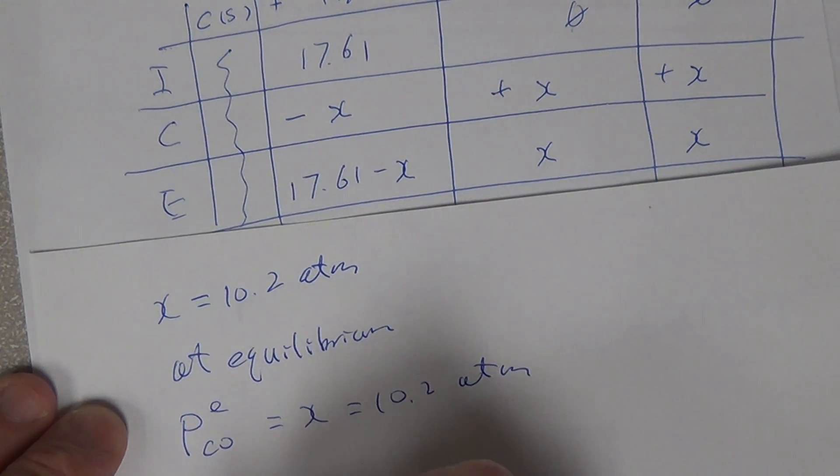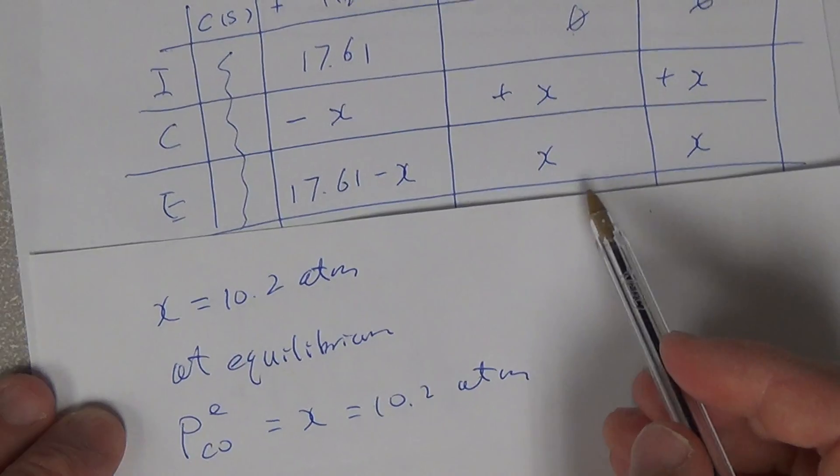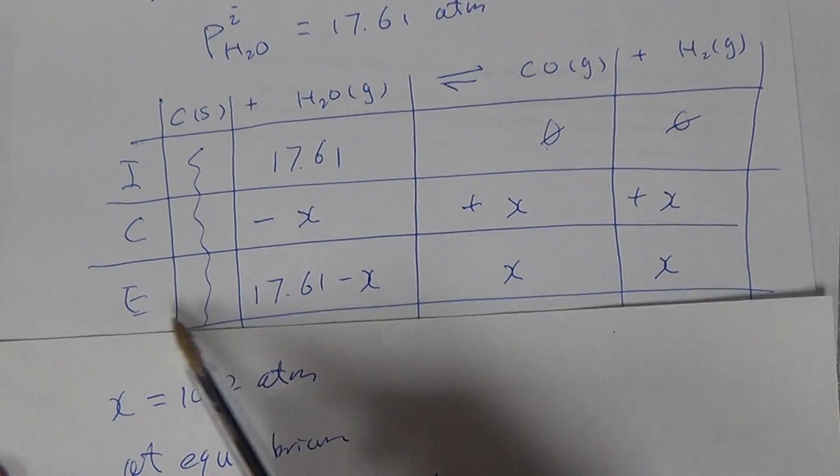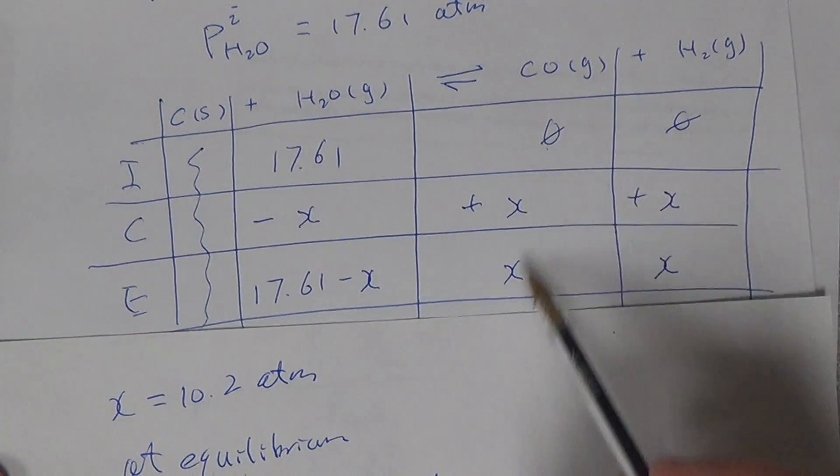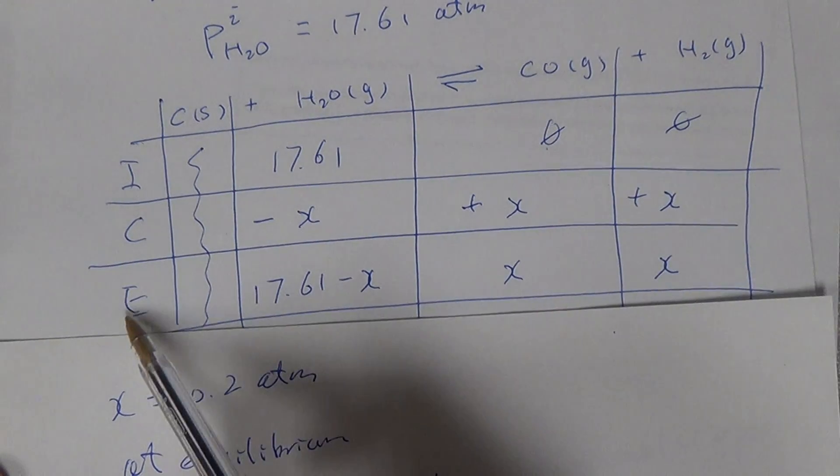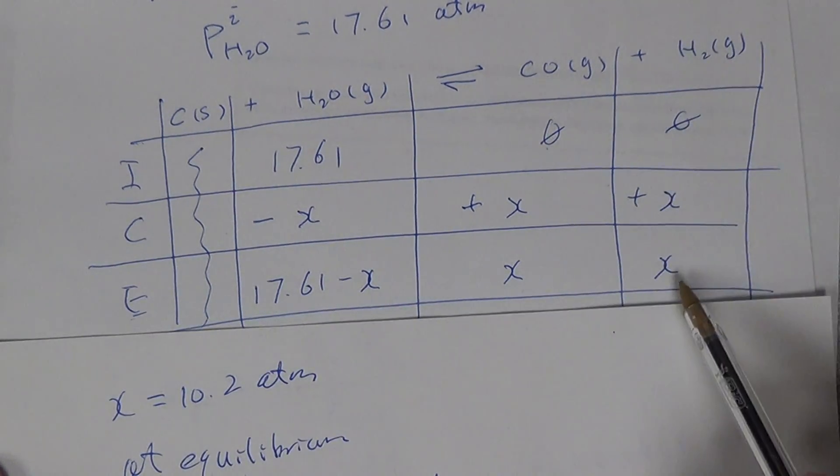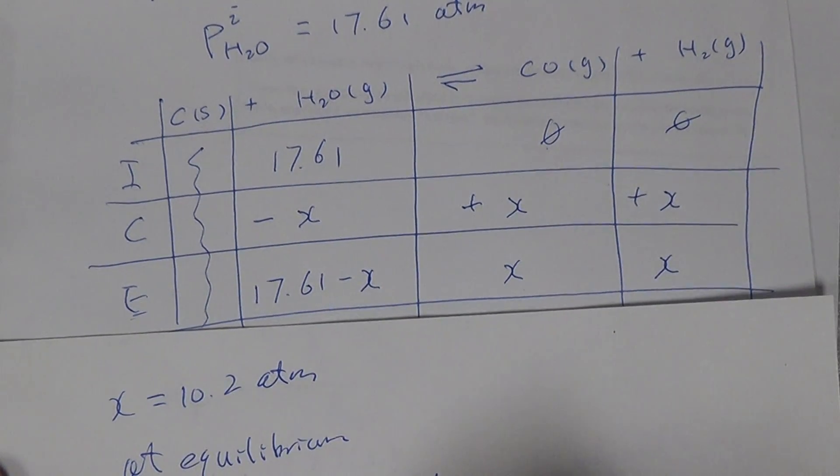So then pH2 E equal to x, right? The ICE table, so at equilibrium for CO is x. At equilibrium for H2 is x, so 10.2 atm.